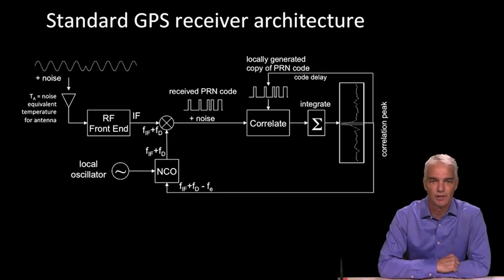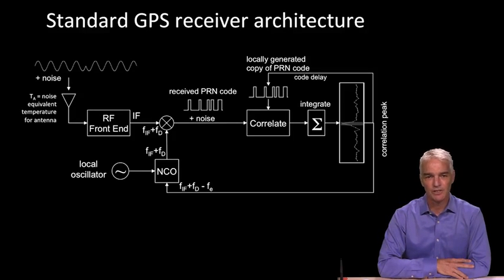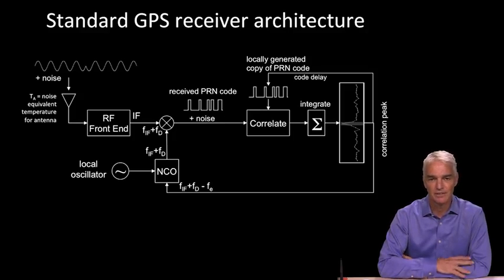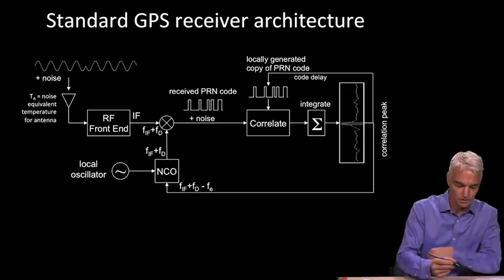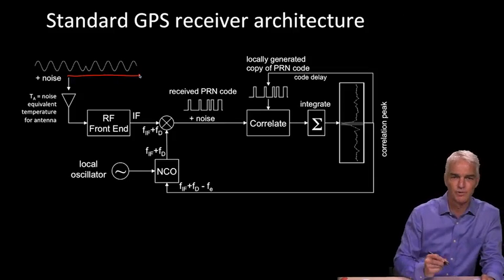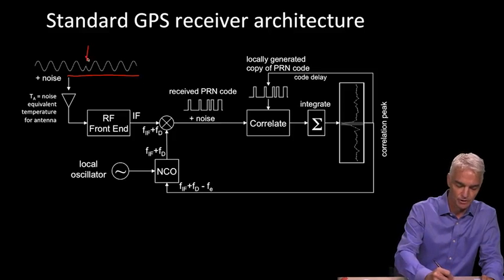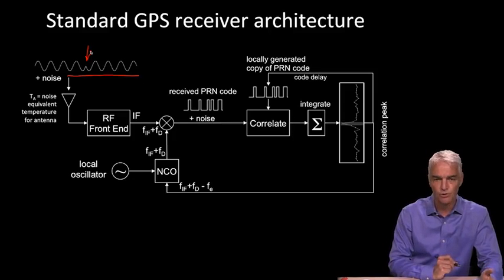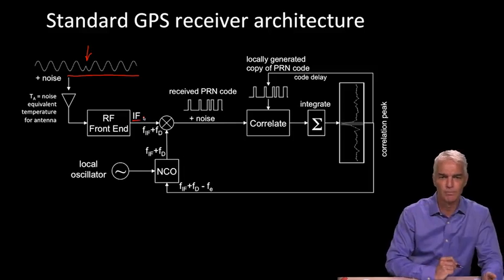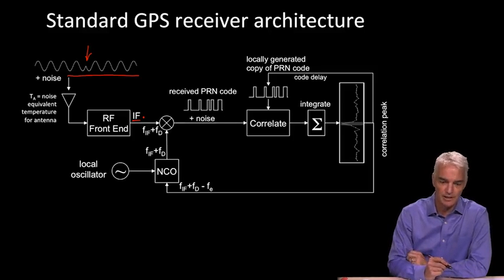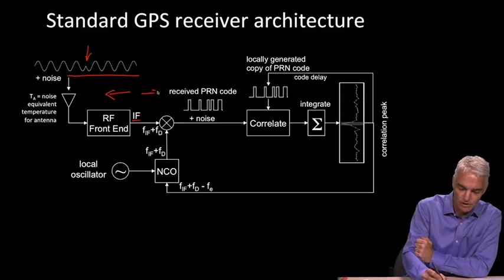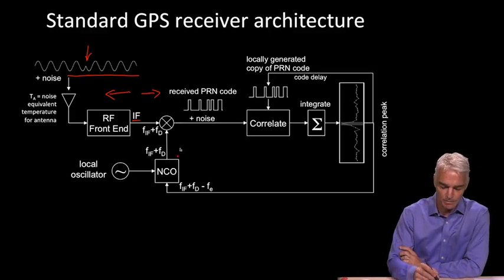Now we'll look at the block diagram of a standard GPS receiver — the standard block diagram for any GPS receiver. No matter how a receiver is architected, you can always find the blocks shown here. The signal comes from the satellite as a BPSK signal — a carrier wave modulated by a code, changing phase every now and again. That signal goes through the antenna and through the front end of the receiver, where it is converted down to intermediate frequency, IF. IF is a frequency low enough that we can digitally sample the signal. The analog part of a GPS receiver is to the left, and everything to the right is the digital part.